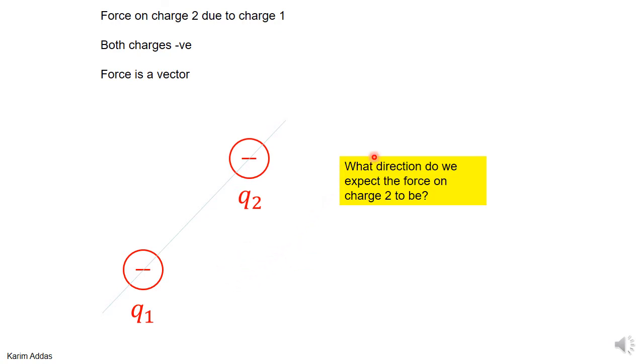So what do you think the direction of the force on 2 due to 1 would be if both charges are negative? The force would be repulsive, so it would be pushing this charge away from the other charge, so it would be pointing in this direction. We're going to use the same notation we used before.